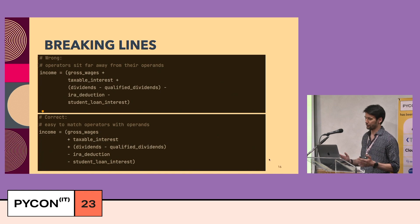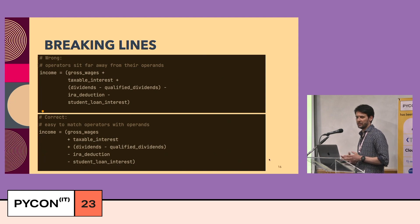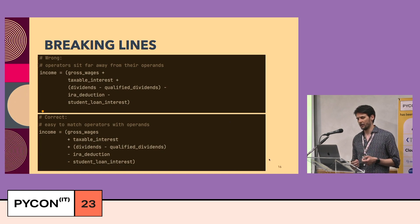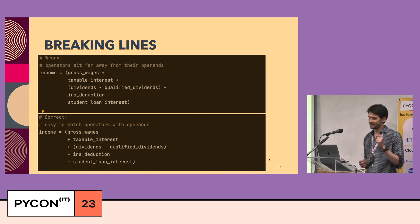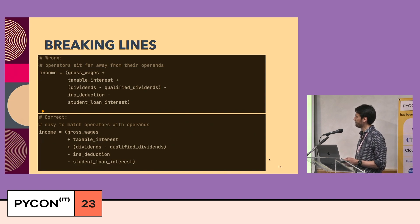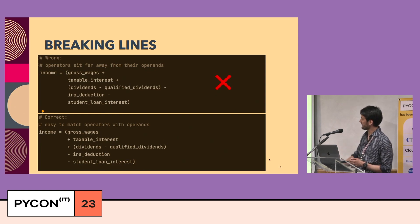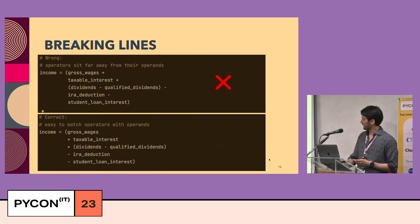Now let's move to breaking lines. For decades, the recommended style was to break a line after a binary operator, but this can hurt readability — the operator gets scattered across different columns, and each operator is moved away from its operand onto the previous line. Mathematicians had the same issue and figured out that the best approach is the opposite. PEP8 recommends breaking before the binary operator. In the first example it's hard to tell if taxable interest is added or subtracted, but in the second example it's extremely clear.